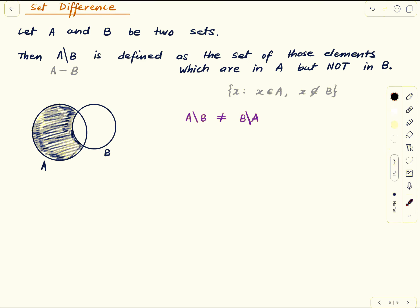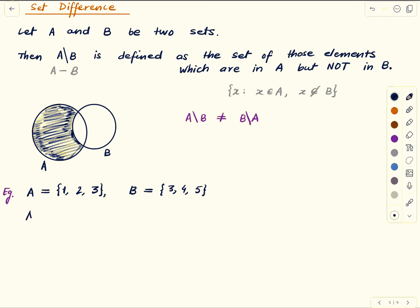For a simple example, if A = {1, 2, 3} and B = {3, 4, 5}, then A \ B is {1, 2}. Let's also note that A \ A is the empty set always, and A \ ∅ is A — this is always true.